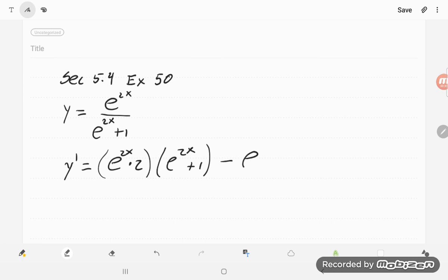Subtract then the thing on the top, e to the 2x, times the derivative of the thing on the bottom, but that's just 2e to the 2x, because the 1 just makes a 0, and then square the thing on the bottom, e to the 2x plus 1 squared.